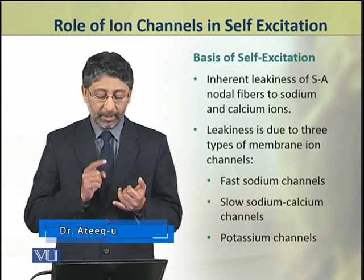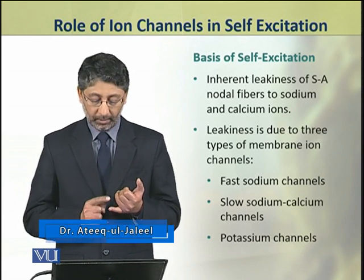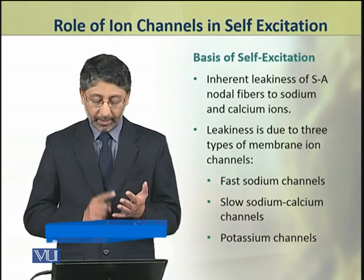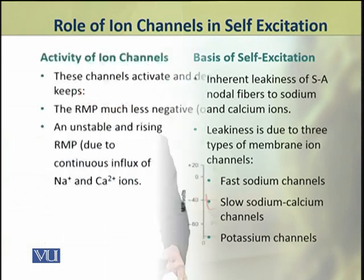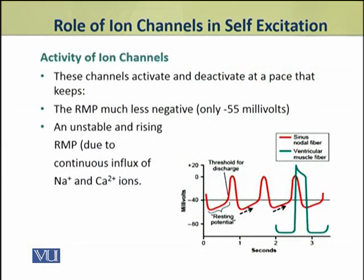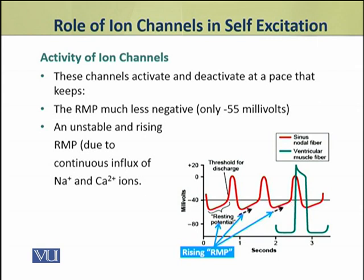These are the fast sodium channels, slow sodium-calcium channels, and potassium channels. These channels activate and deactivate at a pace that keeps the resting membrane potential much less negative — that is, only minus 55 millivolts, as compared to minus 85 to minus 90 millivolts in other cells. It also keeps an unstable and rising resting membrane potential due to continuous influx of sodium and calcium ions.